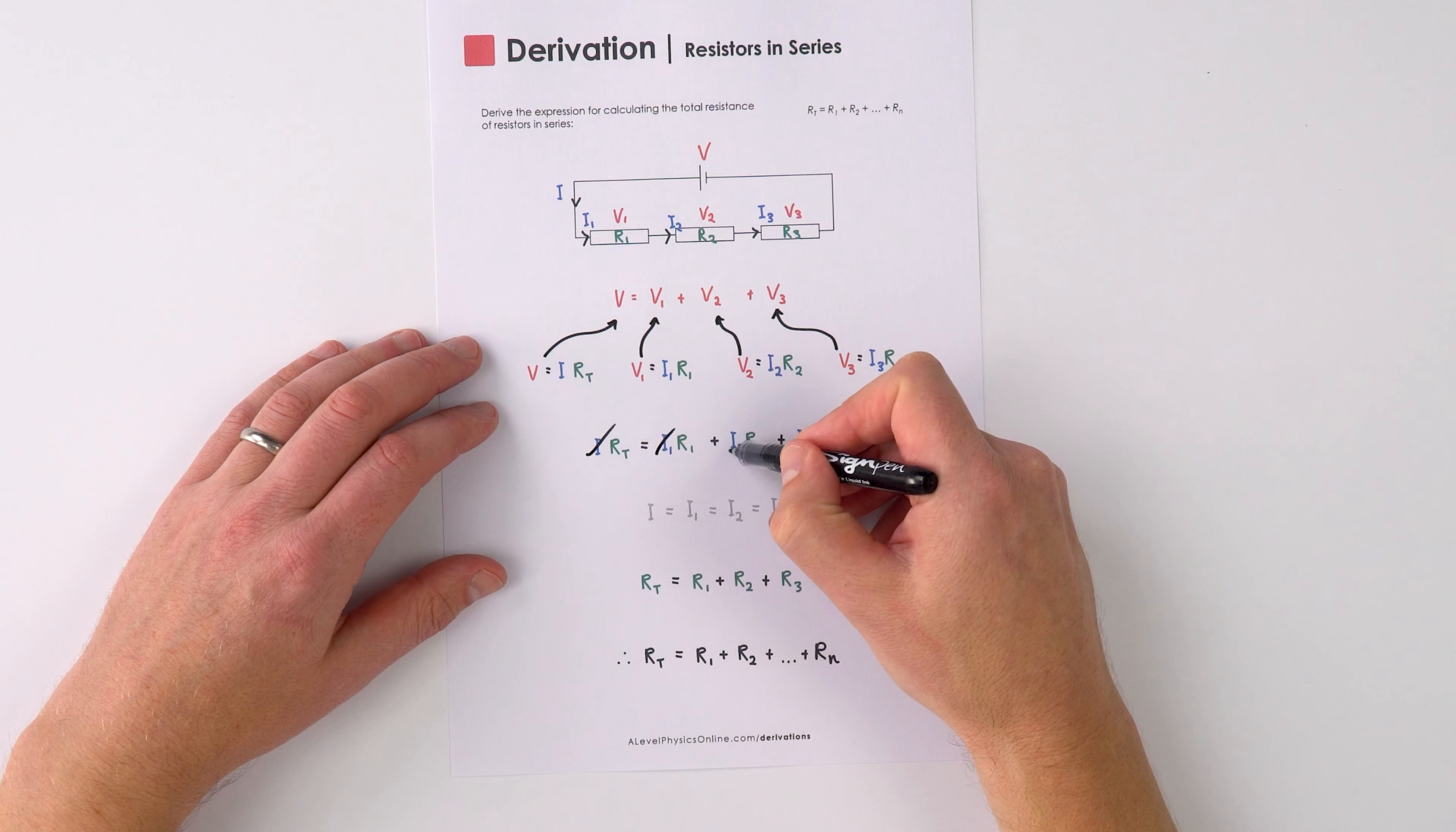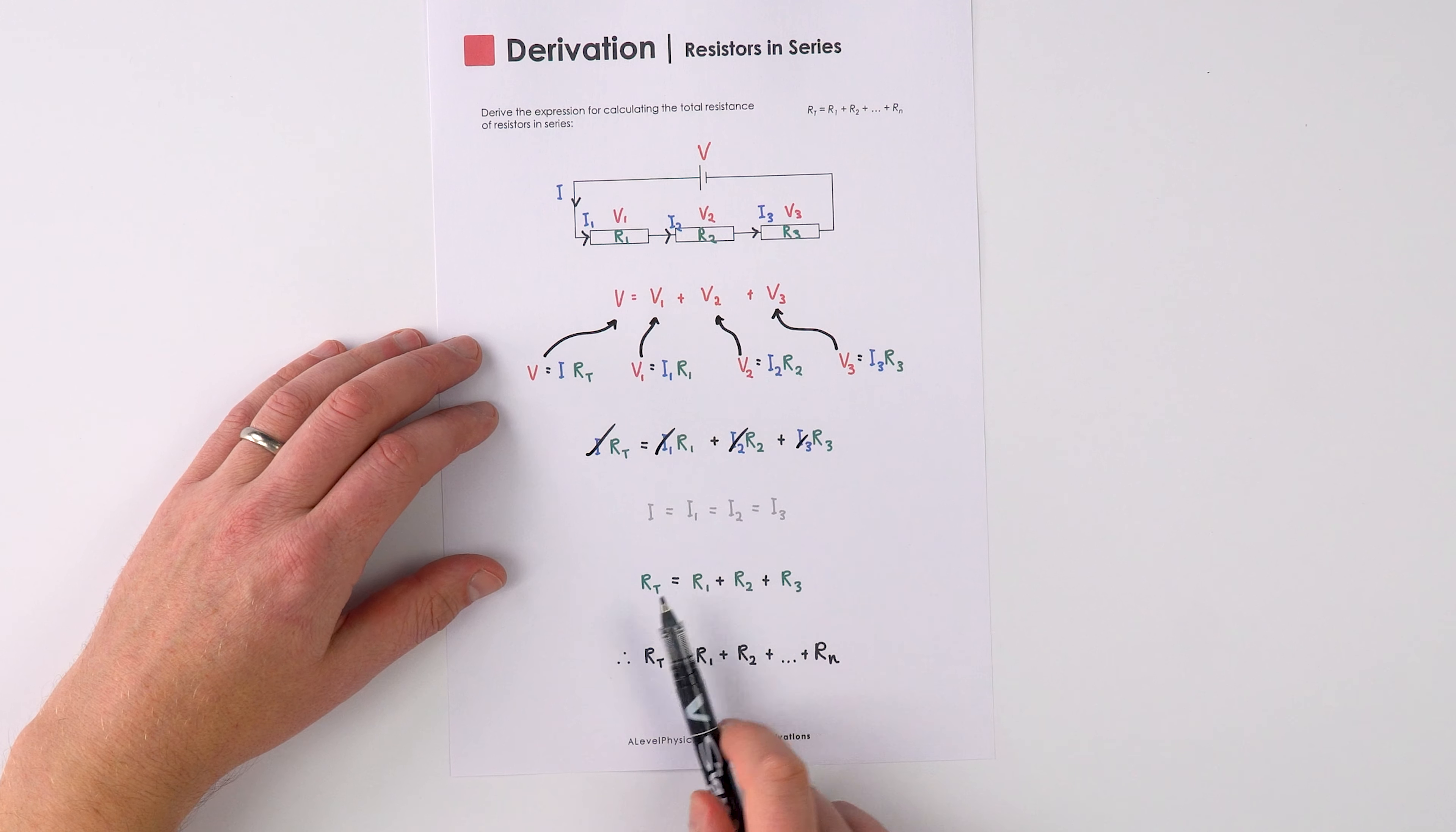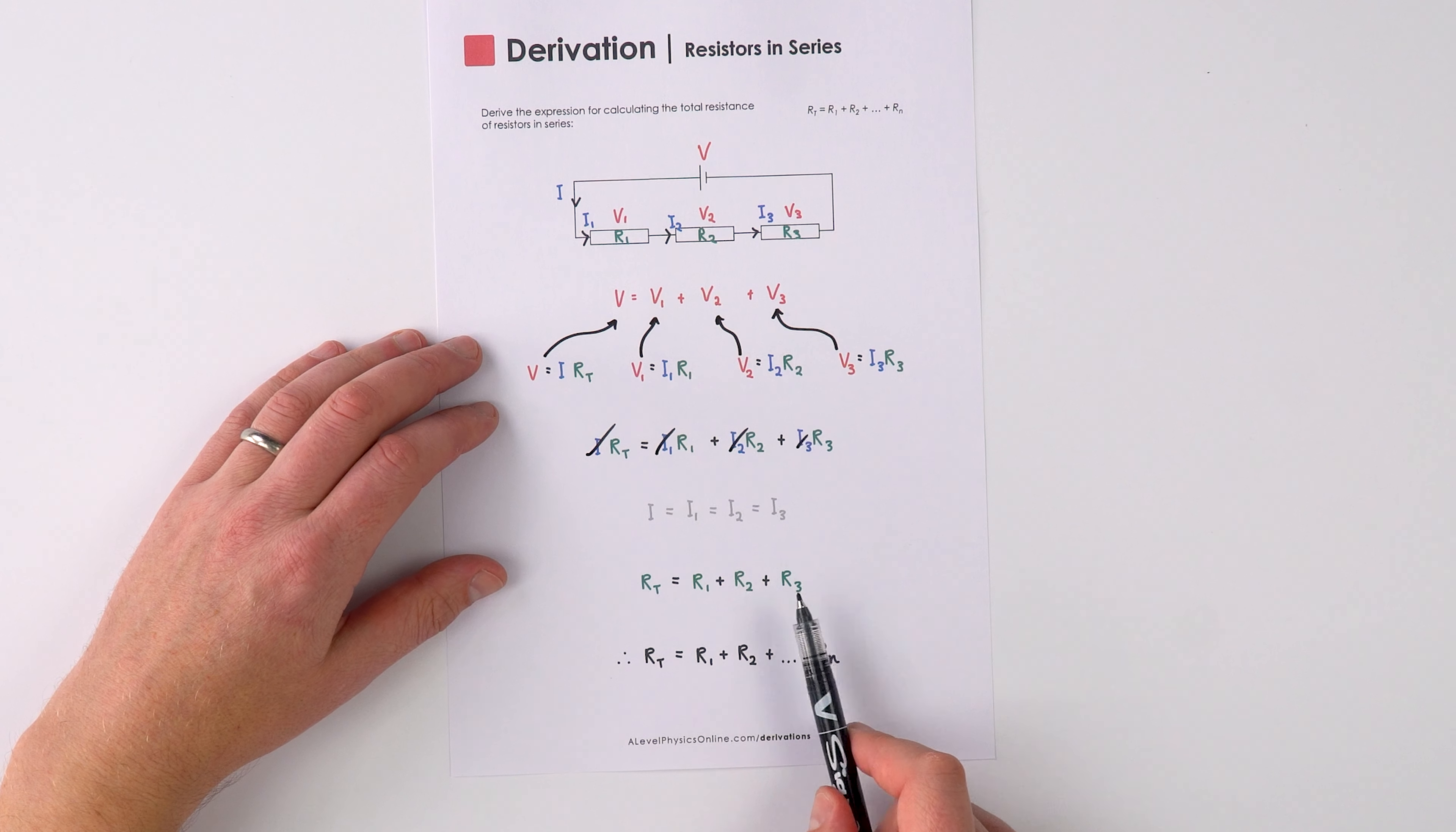And that's why I is equal to I1 which equals I2 which equals I3. And therefore here, we can cancel all of these out to say that RT is equal to R1 plus R2 plus R3.